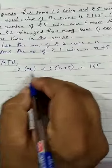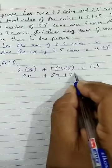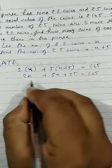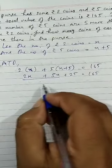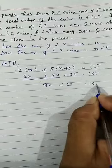So 2 into X gives 2X, 5 into X is 5X, 5 times 5 is 25 equals to 165. 2X and 5X are like terms. So it is 7X plus 25 equals to 165.